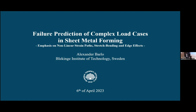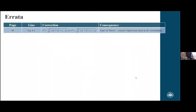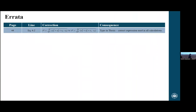Thank you very much, Matt. Before we get started, I have one thing to address in the printed thesis. On page 44 in equation 6.2, I made a typo in the expression for the effective plastic strain of the von Mises constitutive model, where the thesis states it should be 4 over 2, but it should in fact be 4 over 3. This is merely a typo, and the correct expression has been used for all calculations in the thesis and results.